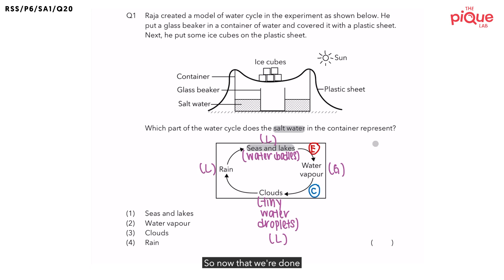So now that we're done analyzing the water cycle, let's take a look at the model of the water cycle that Raja has created. And let's try to match which part of this model represents the parts that we've just analyzed in the water cycle. So which part of this model represents the seas and lakes?